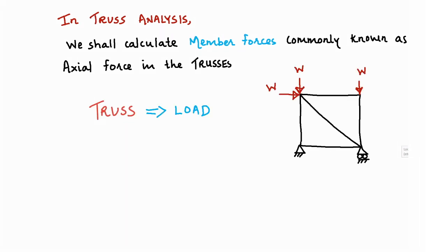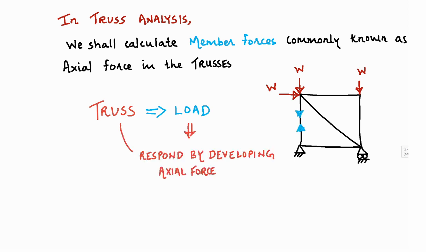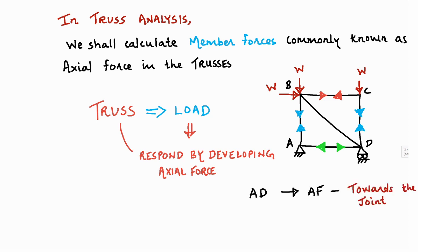When the truss is subjected to external load, the truss responds by developing axial forces. All the members will develop axial forces — some of the axial forces will be towards the joint. For member AD, the axial force is towards the joint, and for member AB, the axial force is away from the joint. We need to understand what 'towards the joint' and 'away from the joint' mean.